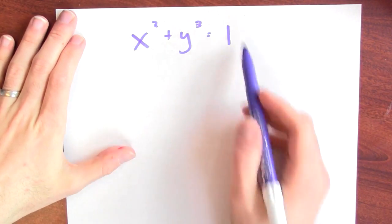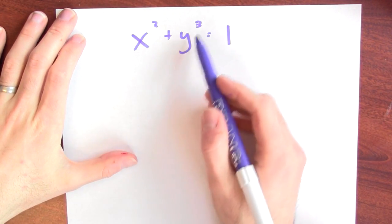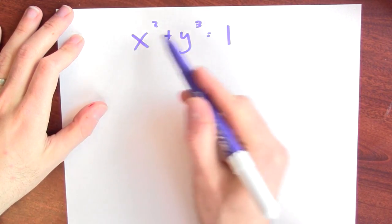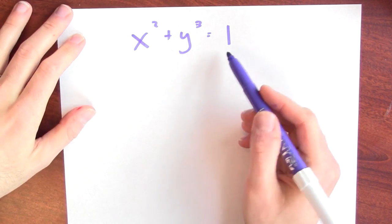To do all these sorts of calculations, the trick is the chain rule. For instance, if you're given some relation like this, x squared plus y cubed equals 1, you just got to make sure to think of y as a function of x. So that when you differentiate both sides,